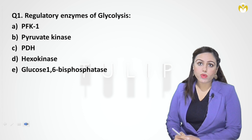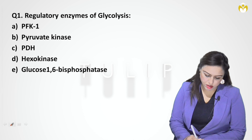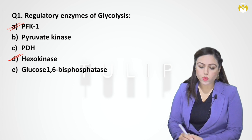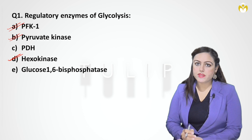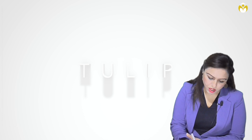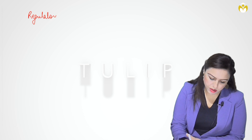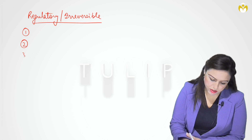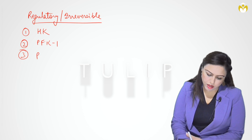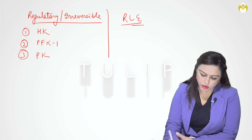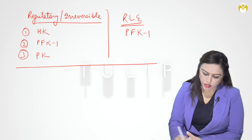The first question is: what are the regulatory enzymes of glycolysis? They are hexokinase, PFK1 (phosphofructokinase 1), and pyruvate kinase. These three enzymes are the regulatory enzymes of glycolysis. If they ask you regulatory enzymes or irreversible steps of glycolysis, it is the same question — hexokinase, PFK1, and pyruvate kinase.